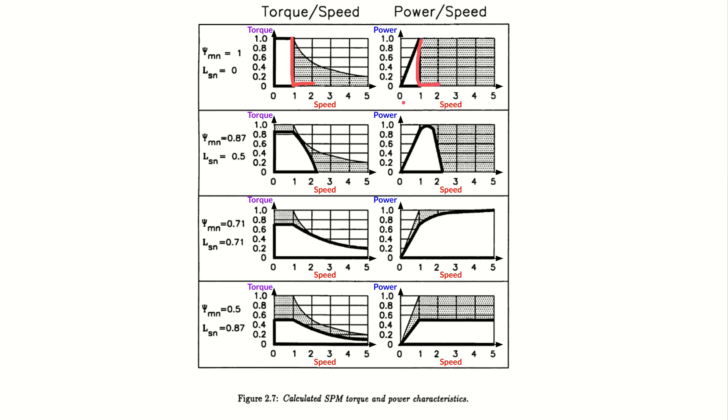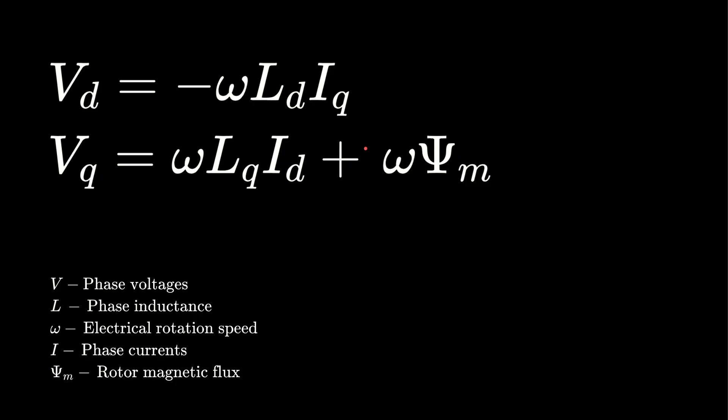That's because we reach voltage saturation and are unable to use field weakening to exceed that speed. We can go back to the voltage equations and see that a small inductance would mean that ID would have a negligible effect on the voltage amplitude compared to the magnetic flux.